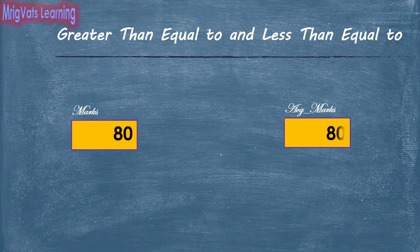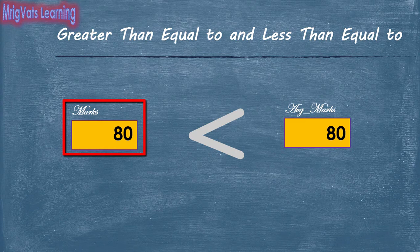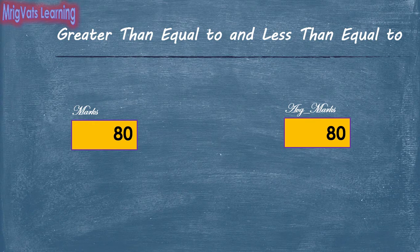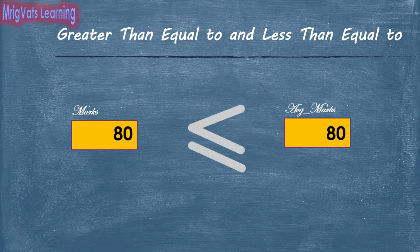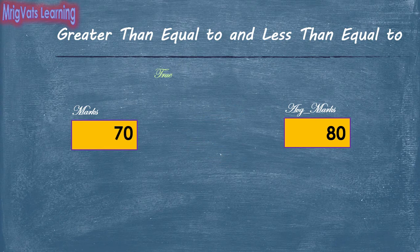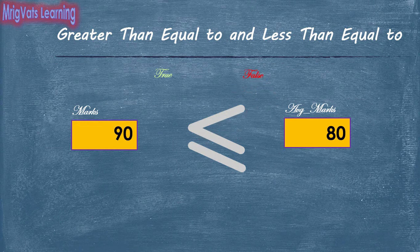Comparing with greater than or less than excludes the boundary value from being evaluated as true. However, at times you might need to include that boundary value as true. To address this, you can use greater than or equal to and less than or equal to signs. Even if the values of two operands are equal, the computer evaluates and gives true as a result. The result is false only if the left-hand side operand is strictly outside the boundary. Some languages such as Python, Perl and shell scripts support GE and LE instead of these signs.